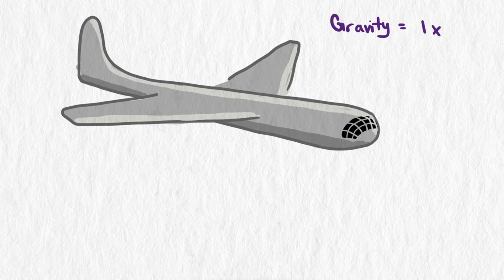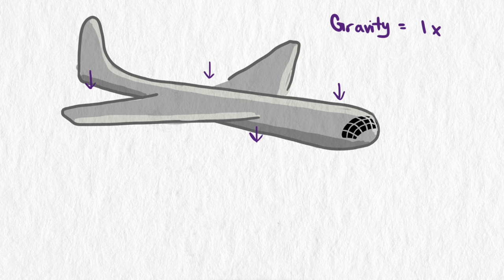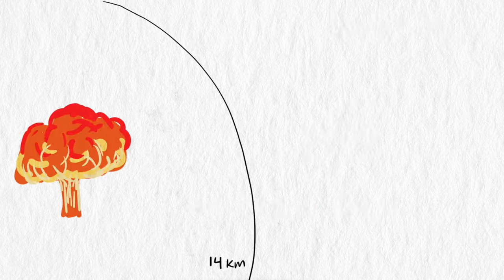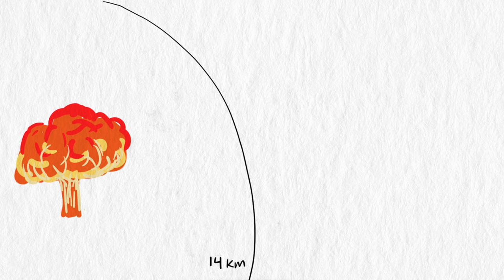Well, Oppenheimer did the math, similar to what we did here with the inverse square law for light. A plane can barely survive a force five times the force of gravity. Planes are made to handle 2.5 times the acceleration due to gravity, or 2.5 g's. That would be a very hard landing or an intense turn in the air. Oppenheimer figured out that the plane would need to be about 14 kilometers away from the blast point of the bomb to survive, and would face a force of about 5 g's.